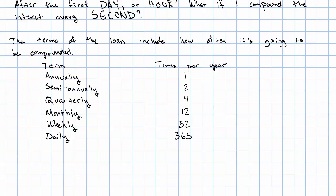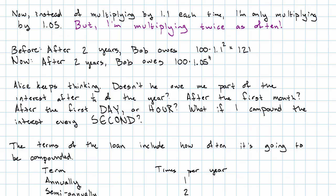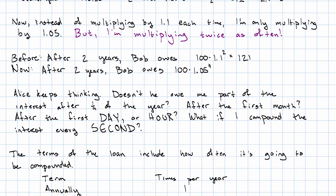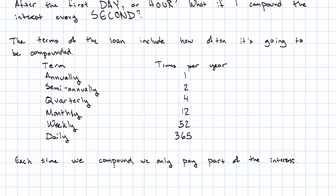Each time we compound, we only pay part of the interest. In our semi-annual example, we were compounding twice a year. We only paid half the interest each time we compound. In general, we're going to take the interest rate and divide it equally among the times we compound.